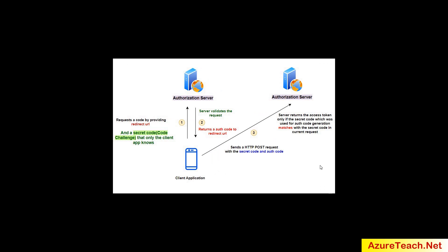Here comes PKCE to mitigate the issue. The client application requests a code by providing the redirect URL and also a secret code called the code challenge, which is only known to the client app — similar to an SSN which is generally confidential. The client app is saying: 'Hey authorization server, if I come to you and request an access token, challenge me with this secret code.' The server validates the request and returns an auth code to the redirect URL. Other apps listening to the same URL can know this code.